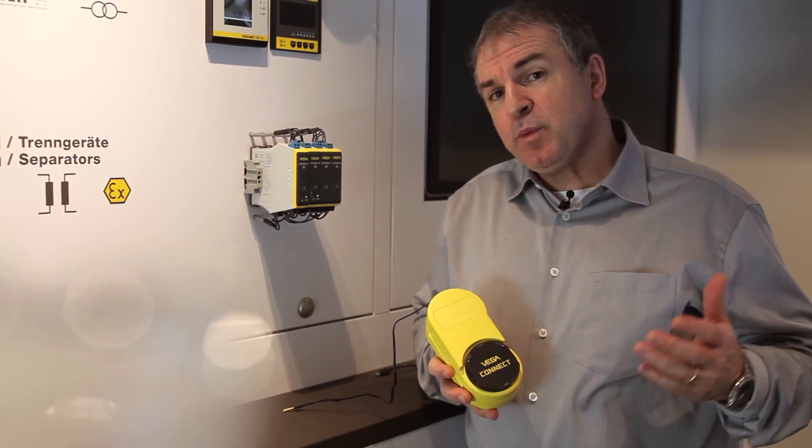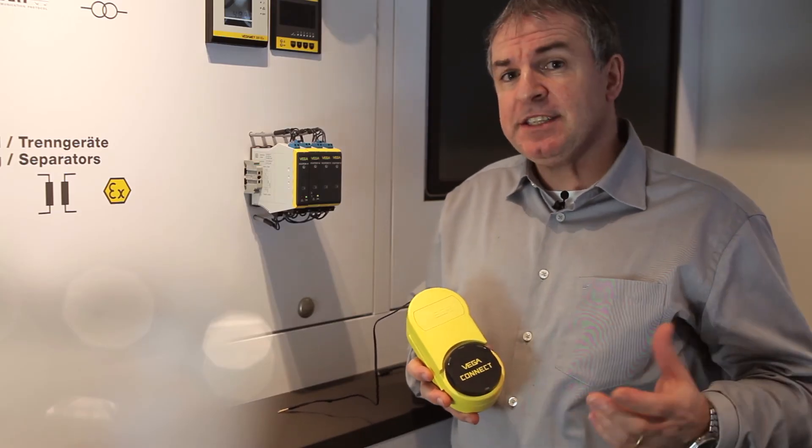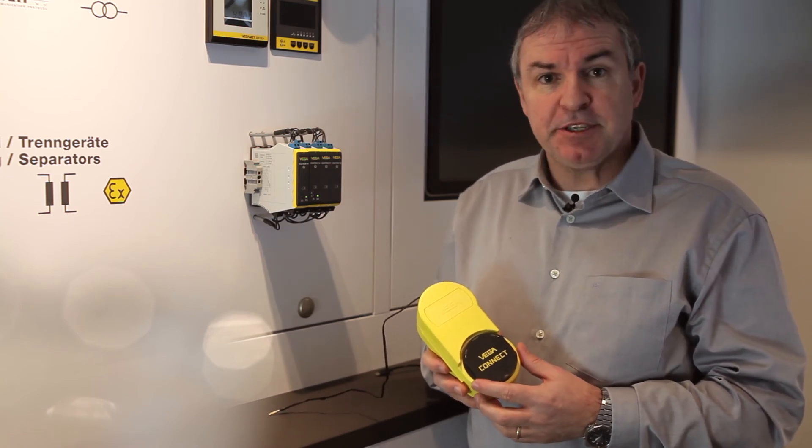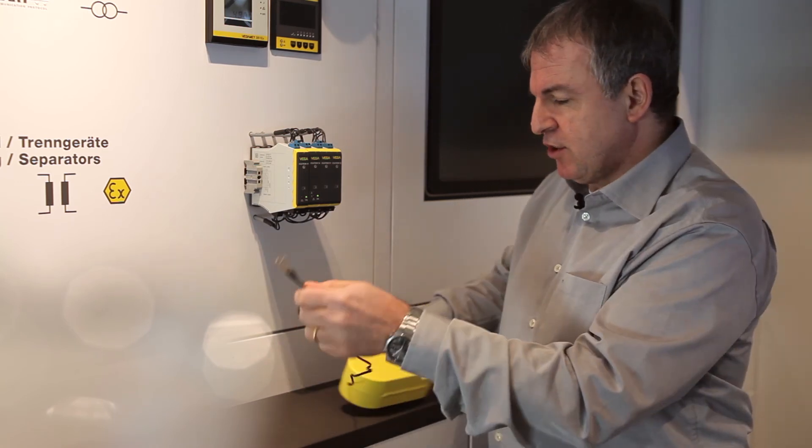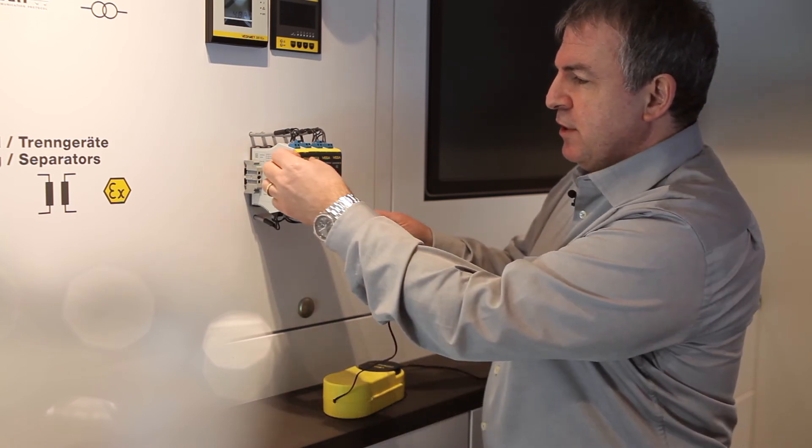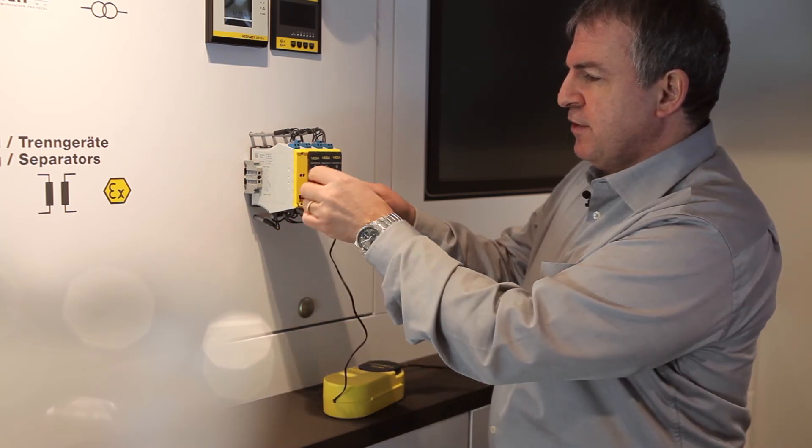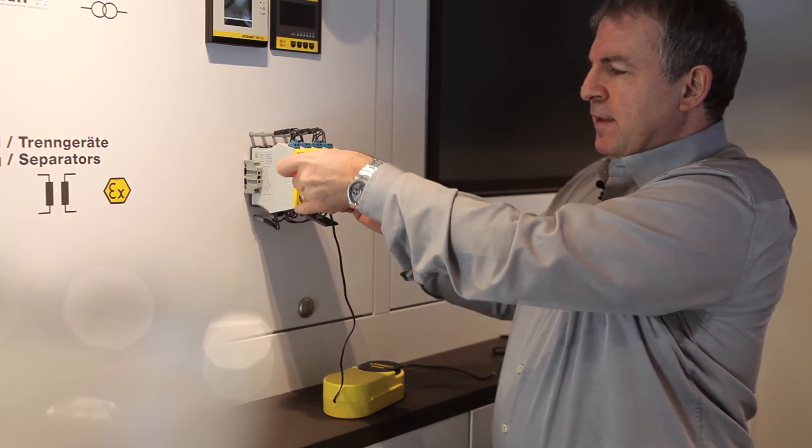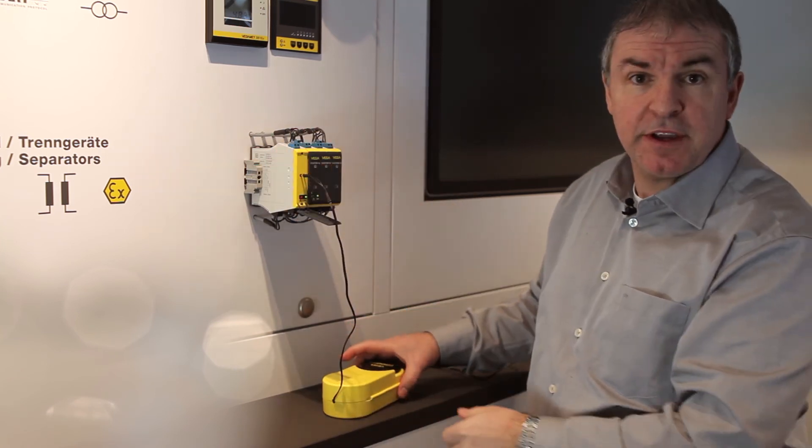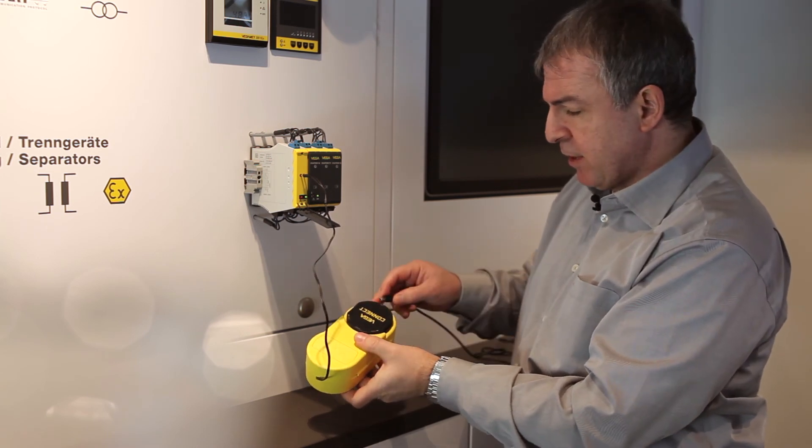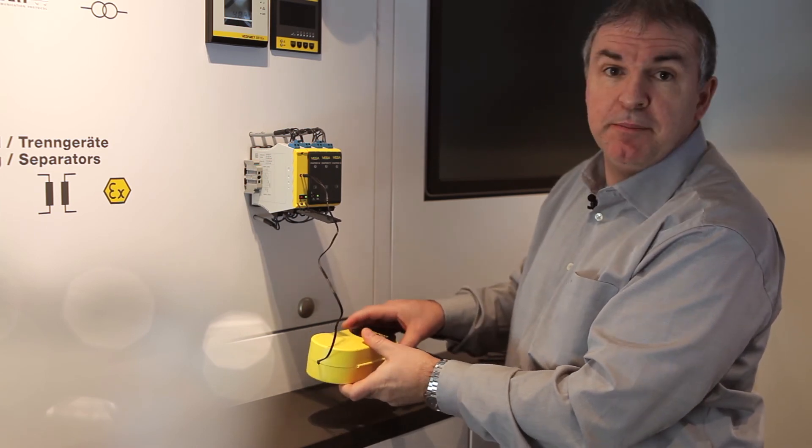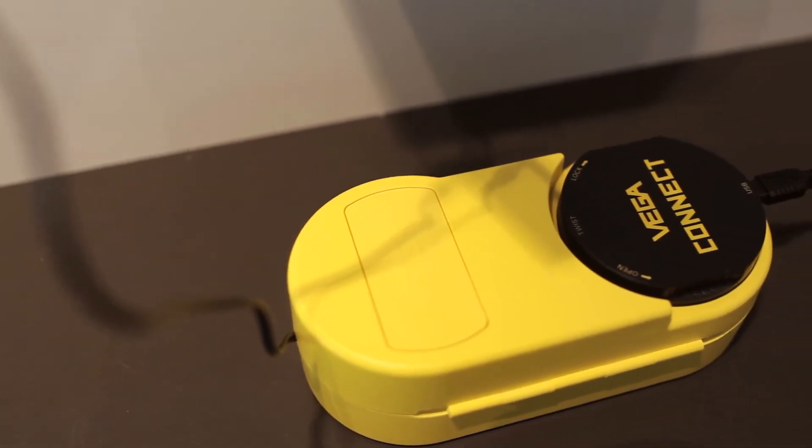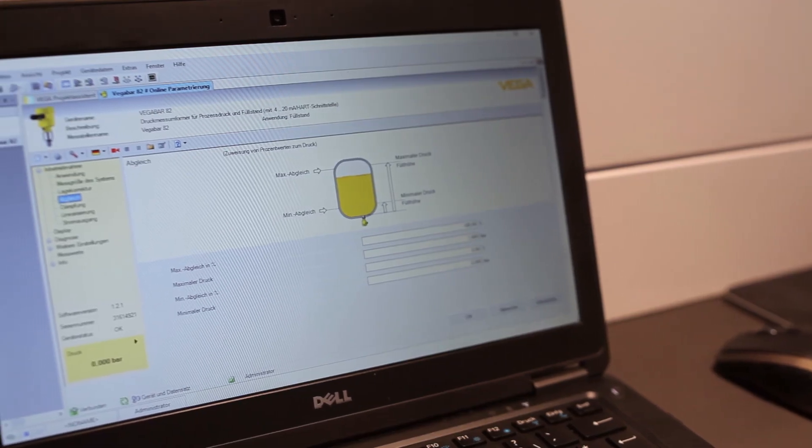The adjustment with Pactware and DTM is just as easy using the Vega connect as an adapter. Just connect the cable to the HART communication socket of the Vega Tren and establish the connection to the PC. In our case here, USB. And now you have a very convenient on-site parametration via laptop.